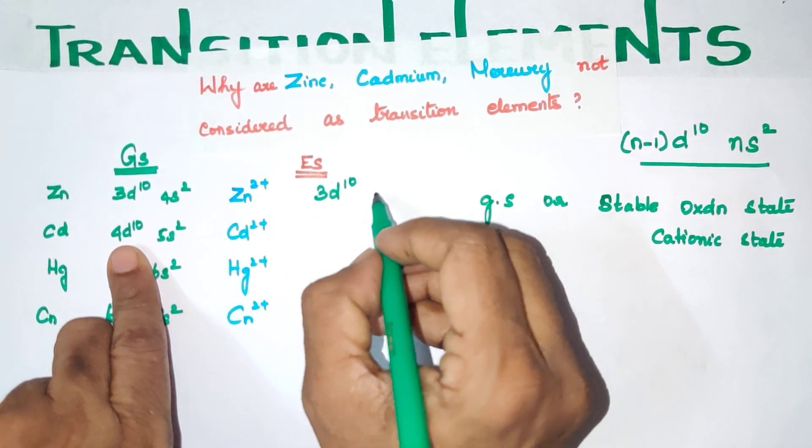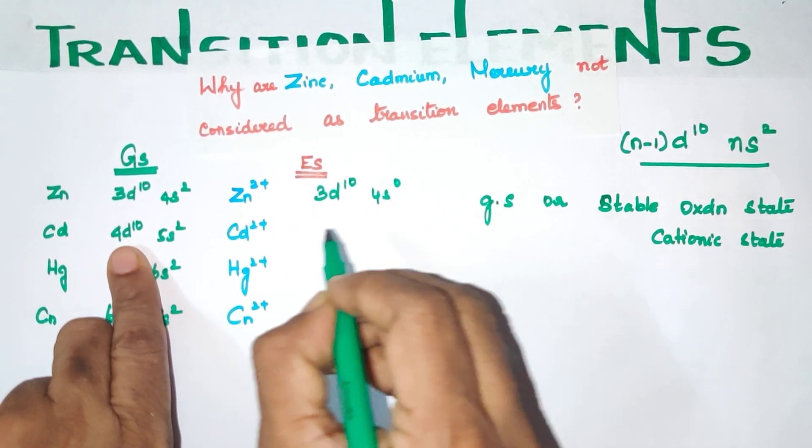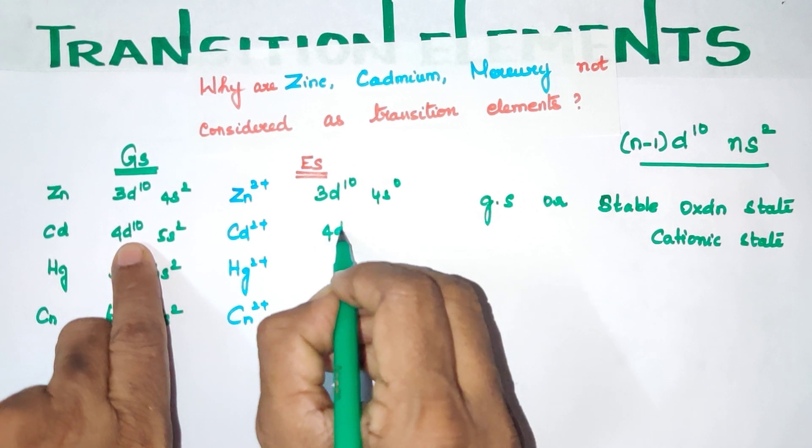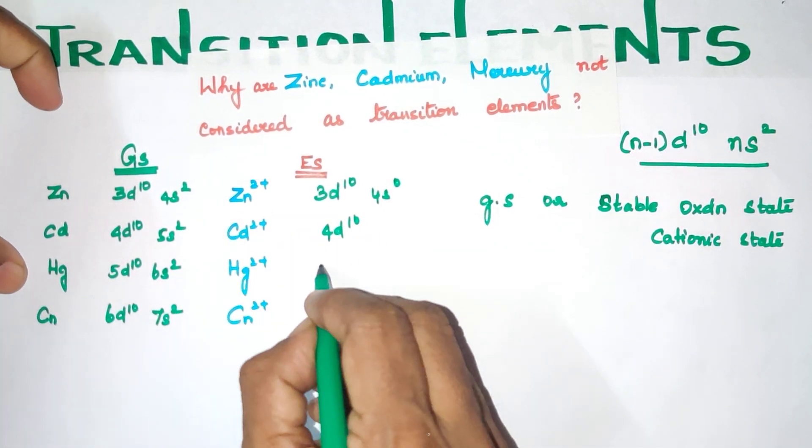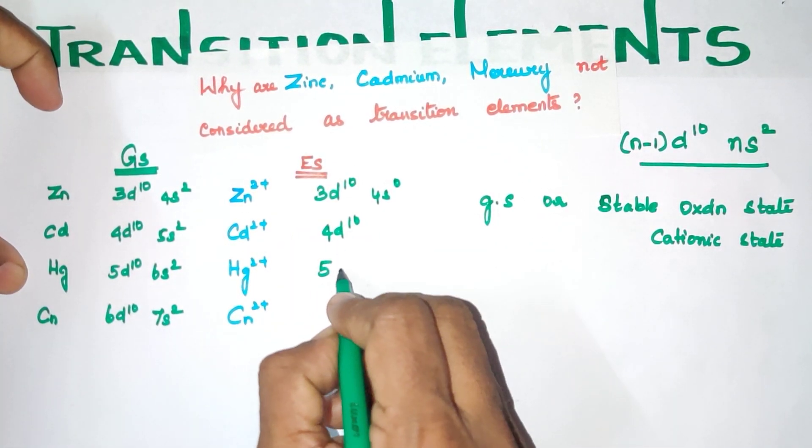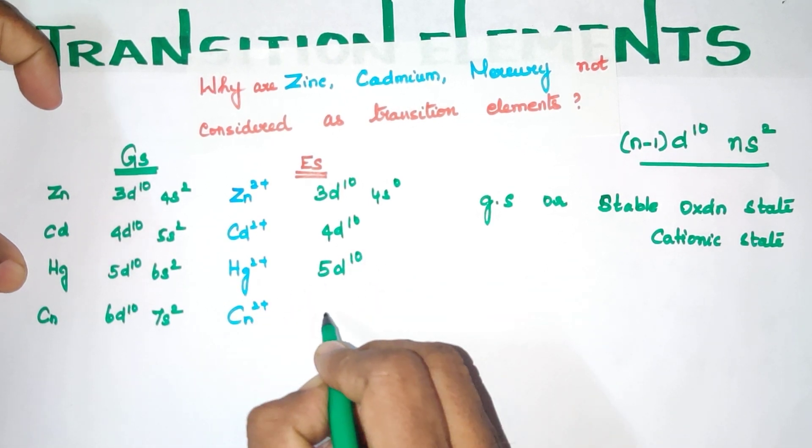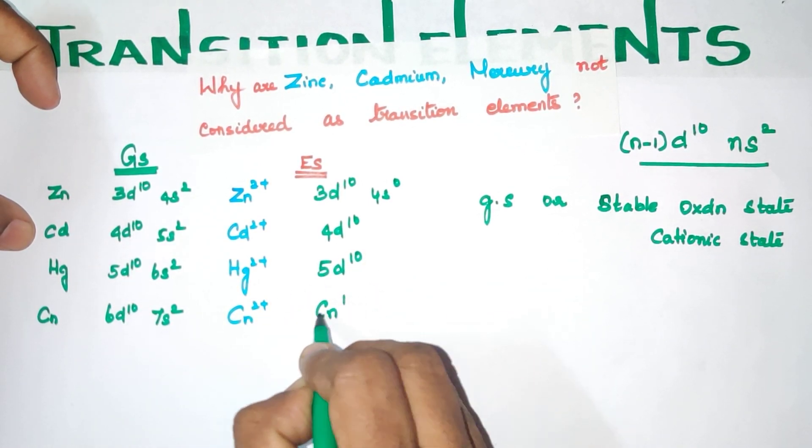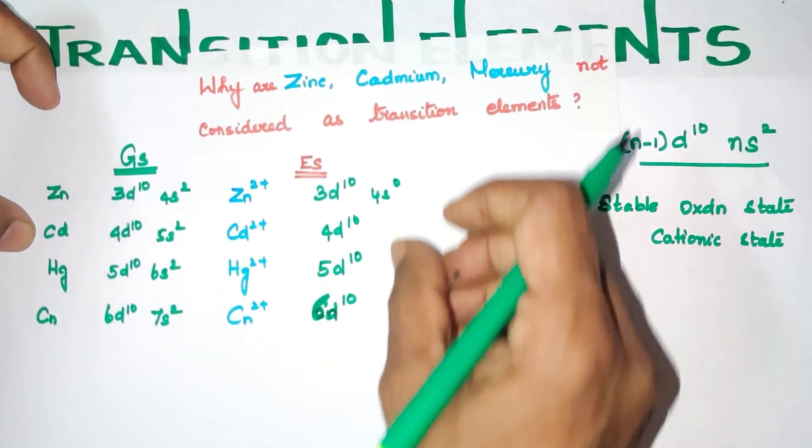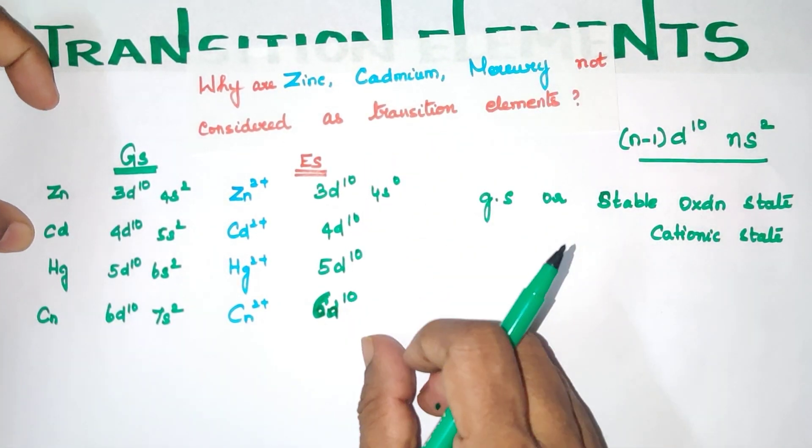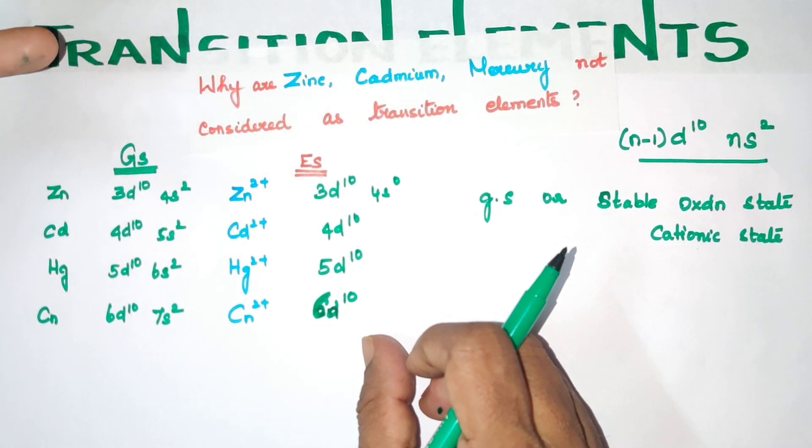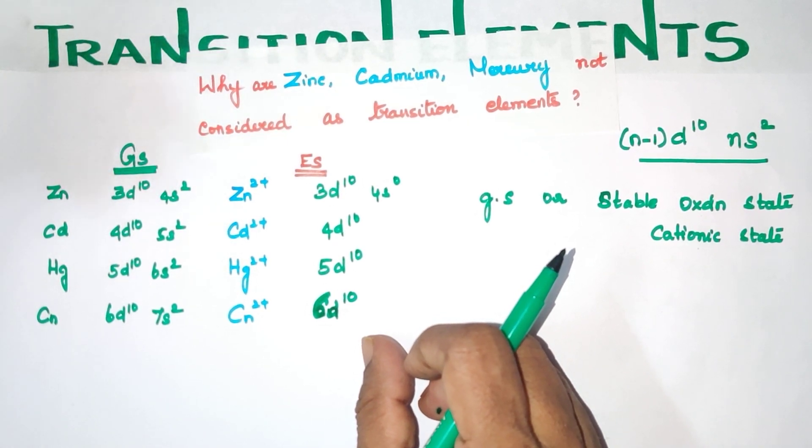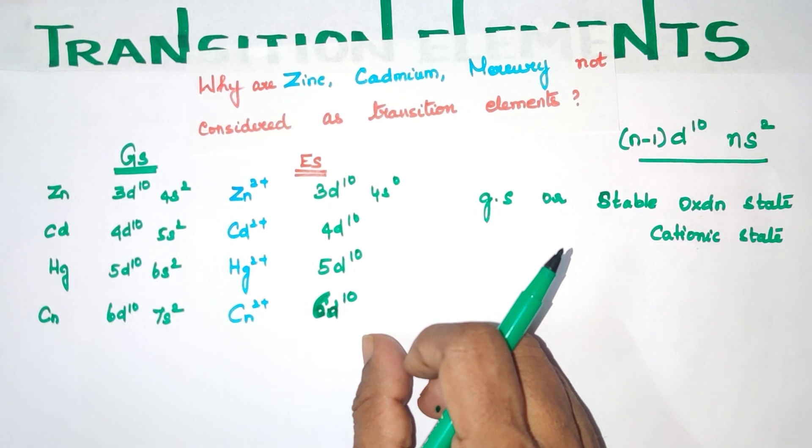Cadmium 2+ will be 4d10 5s0. Mercury 2+ will be 5d10 6s0. Copernicium will be 6d10 7s0. These electronic configurations will be for their most stable oxidation state or their cationic states.